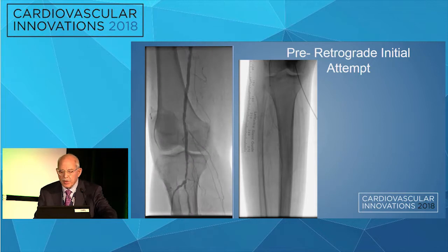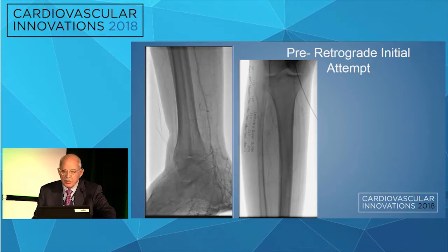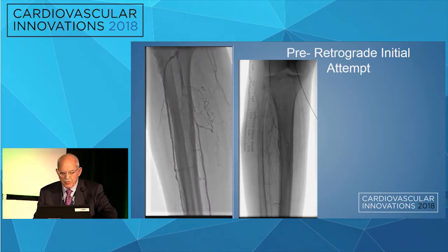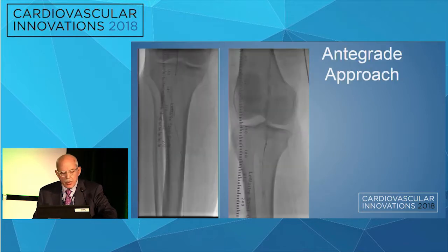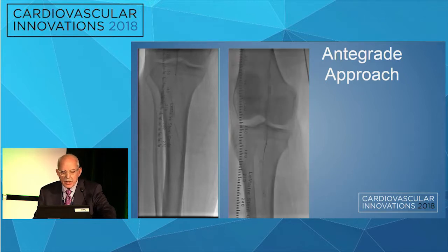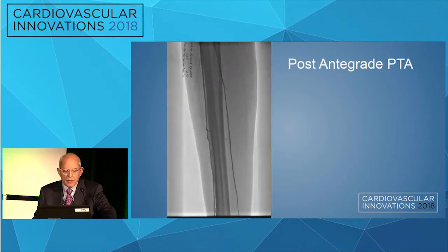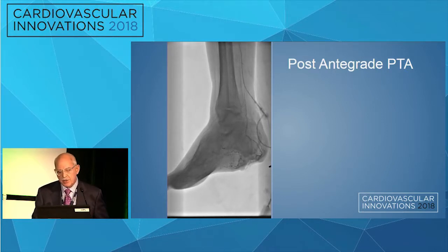This was an initial attempt where we came from above and couldn't get through - we were in a collateral. So we converted and came up retrograde. You can see the wire coming up through a pedal access. We steered the wire back into a small support catheter, then we were able to wire that segment. We now had a floss technique - a wire all the way through. We came from above, ballooned it, and were able to establish a posterior tibial. We had excellent pressure at the posterior tib.